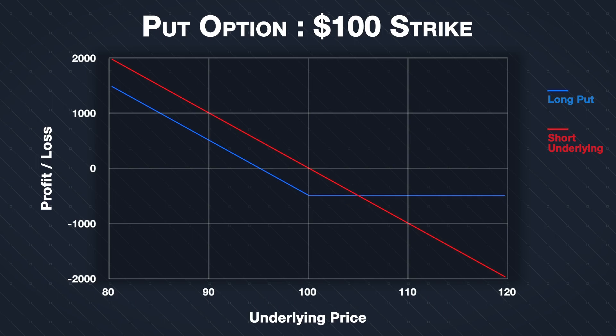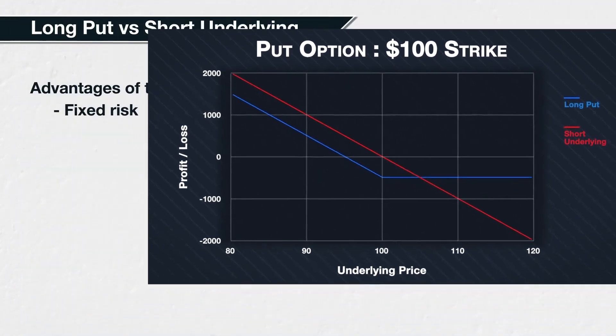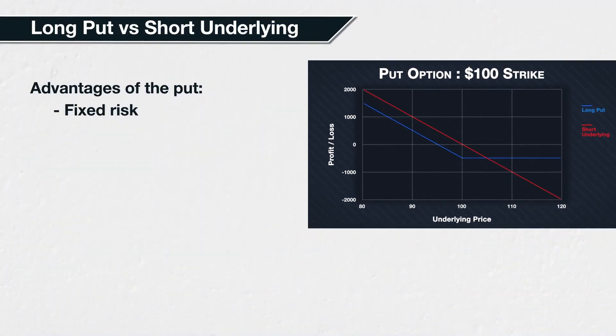In other words, by opting for the put option instead of shorting the shares initially, you're sacrificing a small fixed amount of your potential profit for protection. The capital required in your account to short something will depend on the margin requirements of whatever platform and asset you are trading.